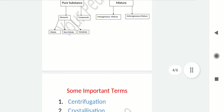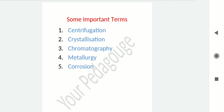Now let's move to the second topic. There are some important terms: centrifugation, crystallization, chromatography, metallurgy, and corrosion. Centrifugation is a technique used in diagnostic laboratories for blood and urine tests, in dairies and homes to separate butter from cream, and in washing machines to squeeze out water from clothes.